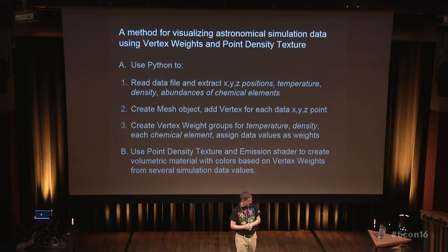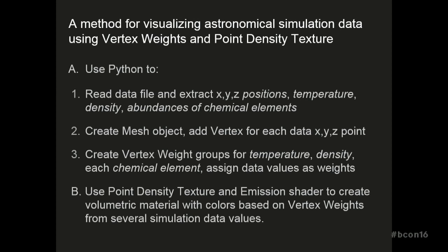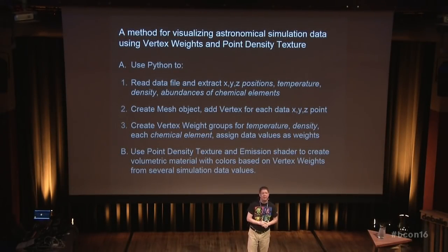Then I got started. A new method for importing and visualizing this data was developed. I used Python to read the data file — these 945,000 particles in the output of the simulation — reading their XYZ positions, densities, temperatures, and chemical abundances. Then I create a mesh object and populate that empty mesh object with vertices, one for each of the tracer particles from the simulation. Then I create vertex weight groups for each of those physical properties — density, temperature, and so on — and those vertex weights can now be read by the new point density texture to control the material.